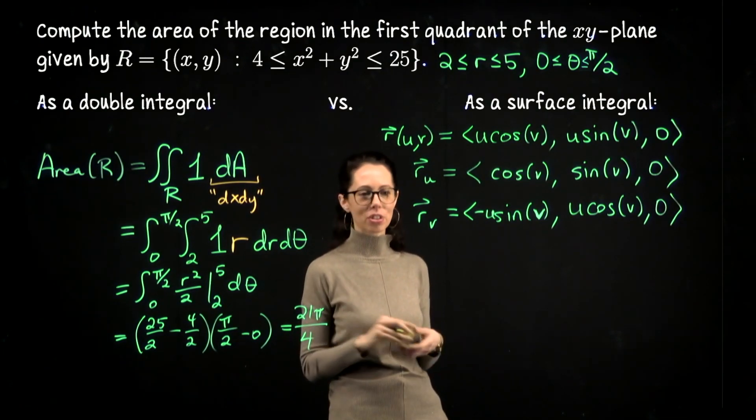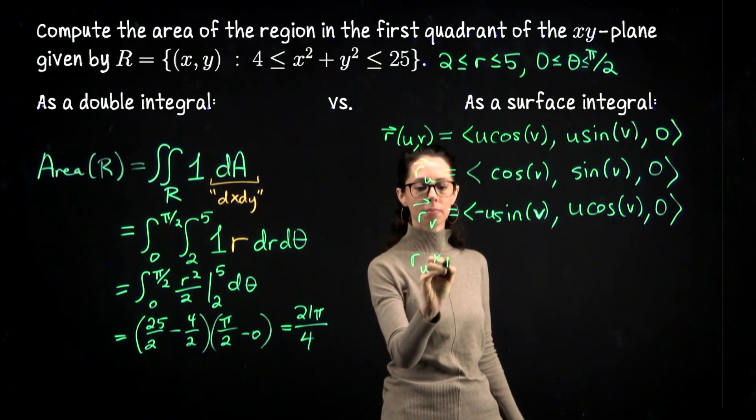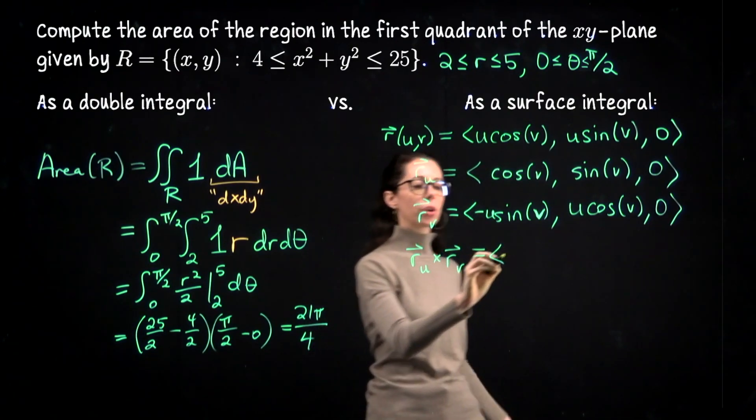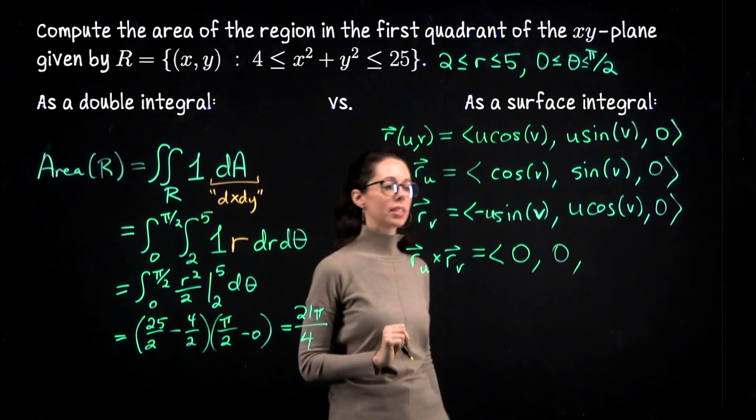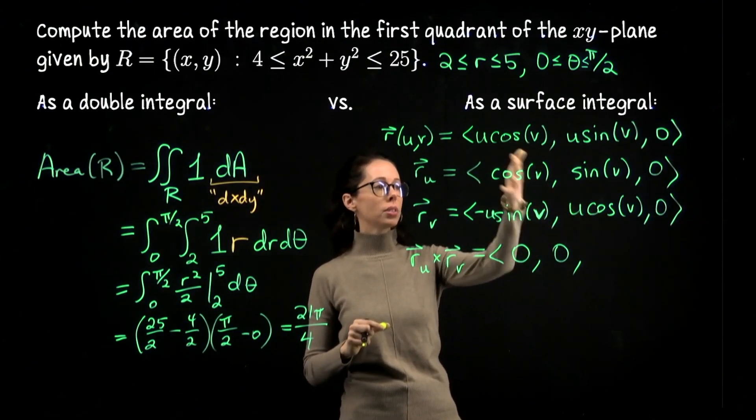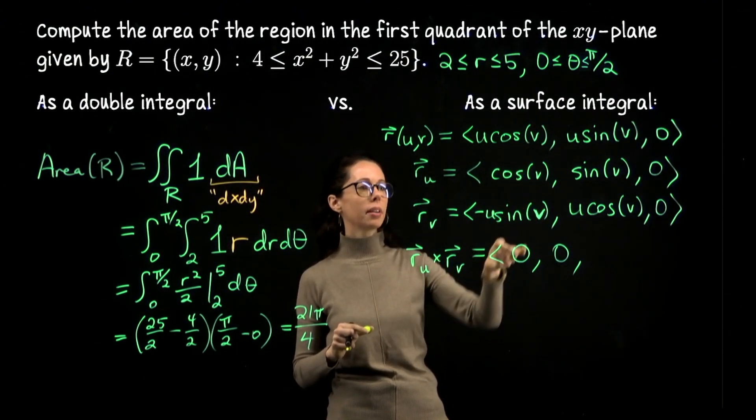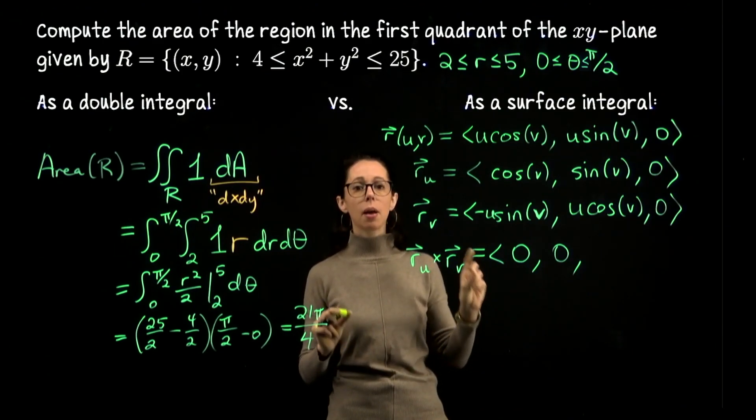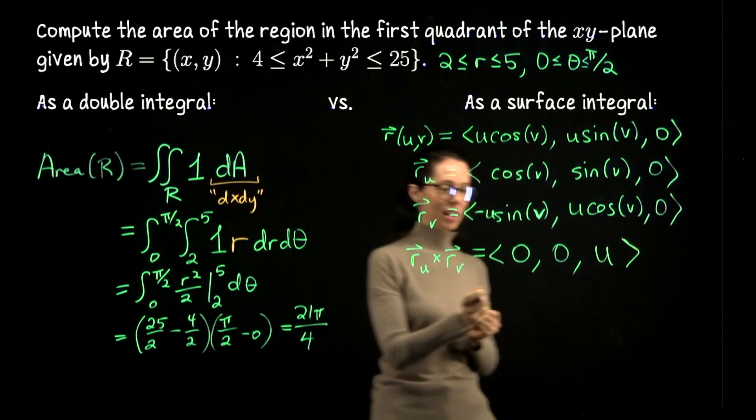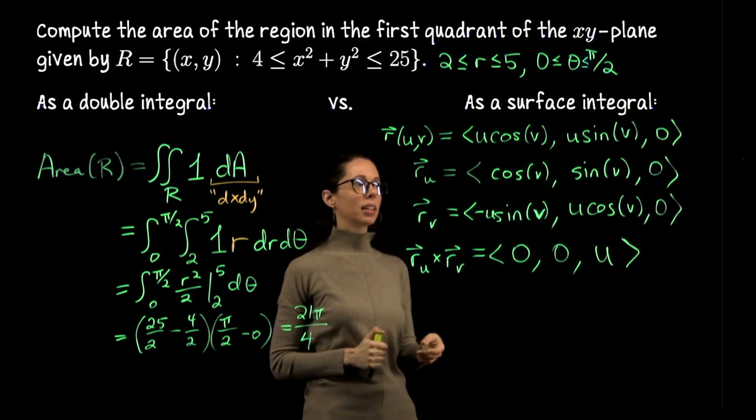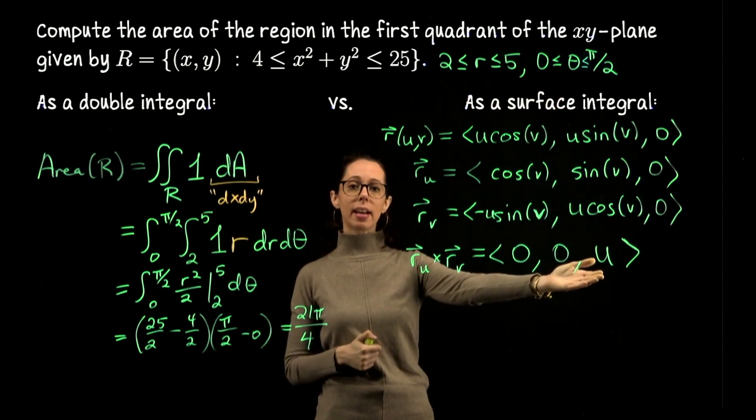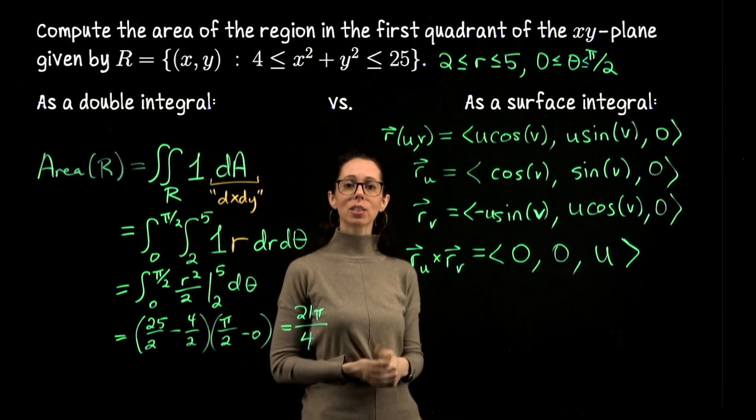So what is r_u cross r_v? Well, you can check this, but the first two components are going to be 0, so this vector either points straight up or straight down. For the third component we have u cos²v minus negative u sin²v, so that's u cos²v plus u sin²v. Overall, that is u. Since our radial component u goes from 2 to 5, I didn't write it down, but it's the same bounds for u and v as we have up here. This means that our orthogonal vector points straight up, because this third component is going to be positive.